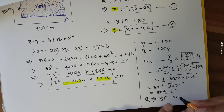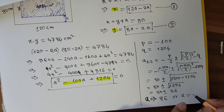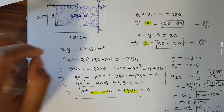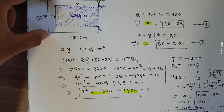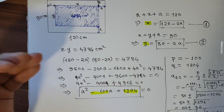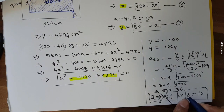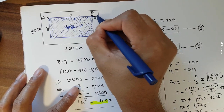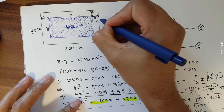Solution one: a equals 50 plus 36 which is 86. Solution two: a equals 50 minus 36 which is 14. So a could be 86 or a could be 14. However, the total width of the larger rectangle is only 80 centimeters, so a value of 86 is not valid. Therefore, a equals 14.